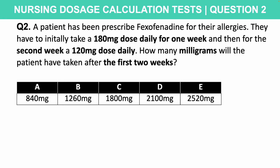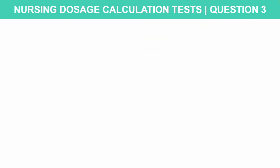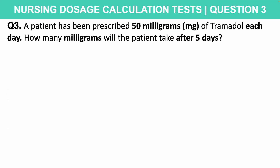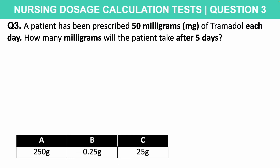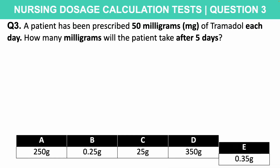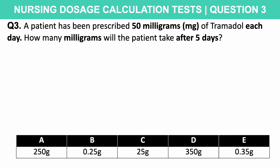Let's move on to another nursing calculation test question — and this time it's going to have a slight twist to it. Question three: a patient has been prescribed 50 mg of tramadol each day. How many milligrams will the patient take after five days? Is it A: 250 grams, B: 0.25 grams, C: 25 grams, D: 350 grams, or E: 0.35 grams?